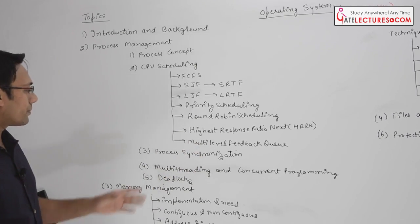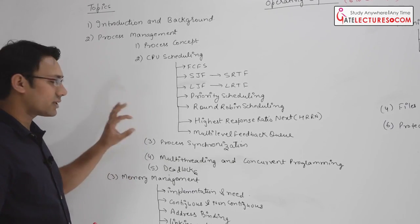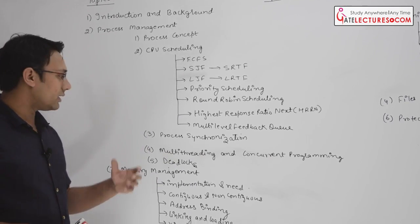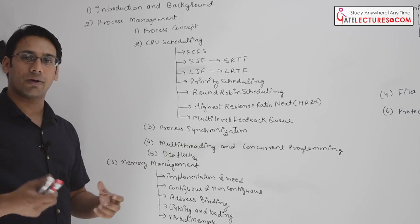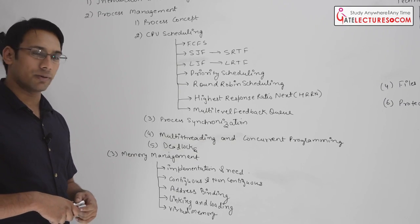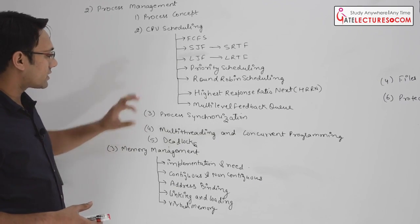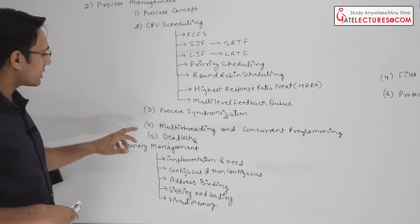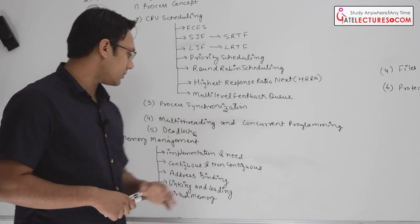Then we are going to discuss process synchronization, where we will cover different synchronization algorithms and different classic problems — for example, the producer-consumer problem and the dining philosopher problem. We are going to discuss all these problems in the process synchronization section. Then we will discuss multi-threading and concurrent programming.